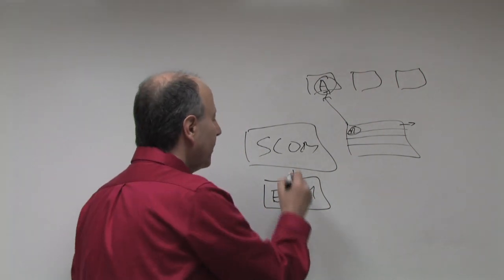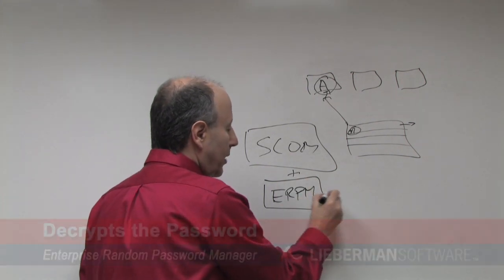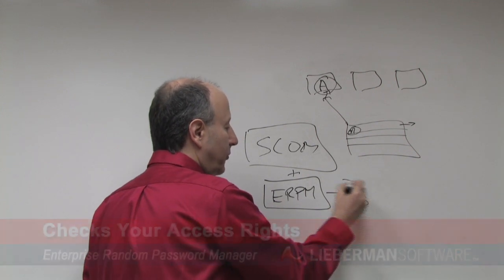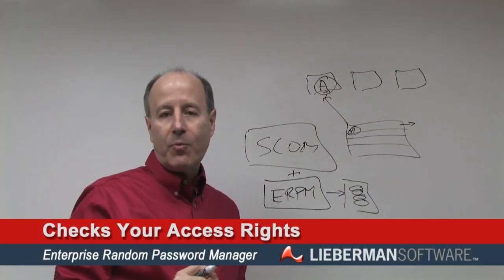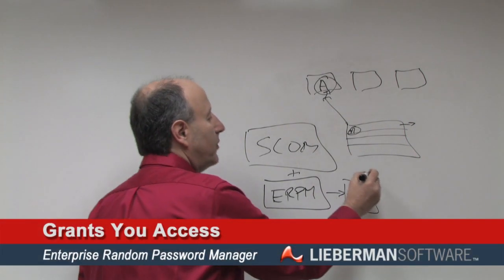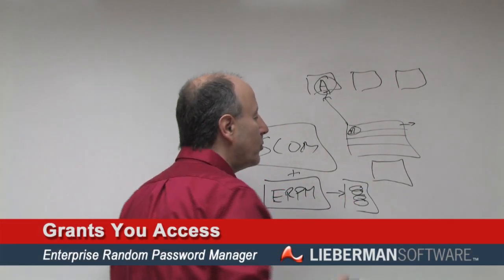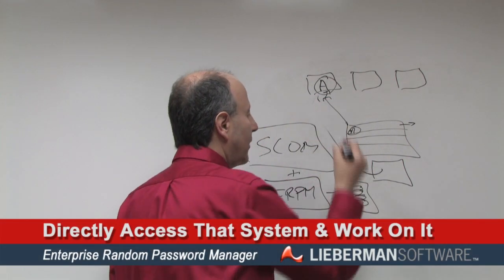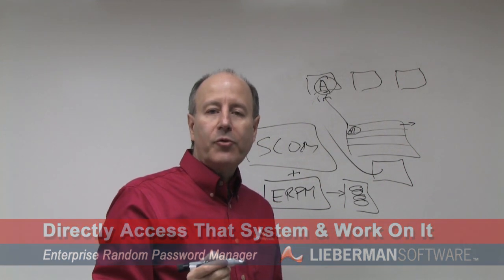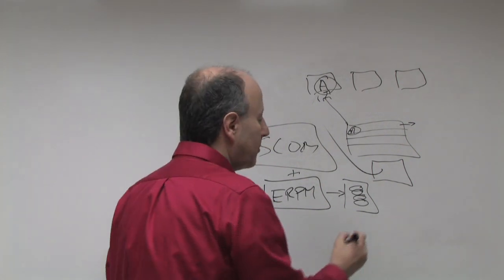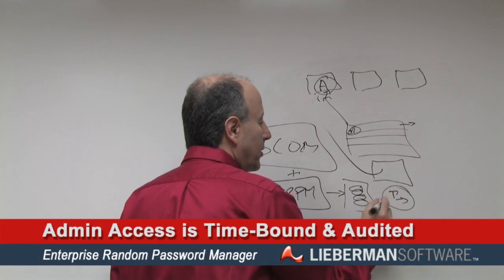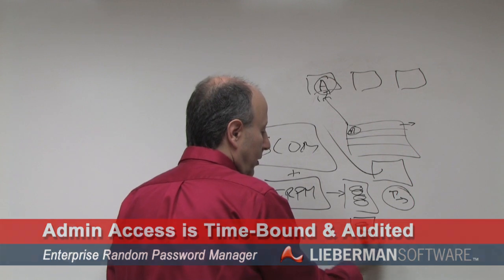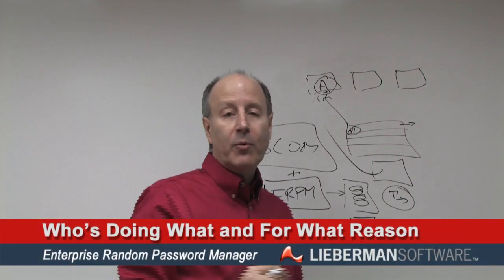What happens behind the scenes is that via the integration, Enterprise Random Password Manager decrypts the passwords for the system you need access to, checks your access rights to make sure you're the right person who's supposed to have access, and grants you the access by providing you with the password for the account you need — giving you the ability to directly access that system and work on it. In the background, ERPM is also keeping a timer on your access and auditing this information so we understand who's doing what and for what reason.